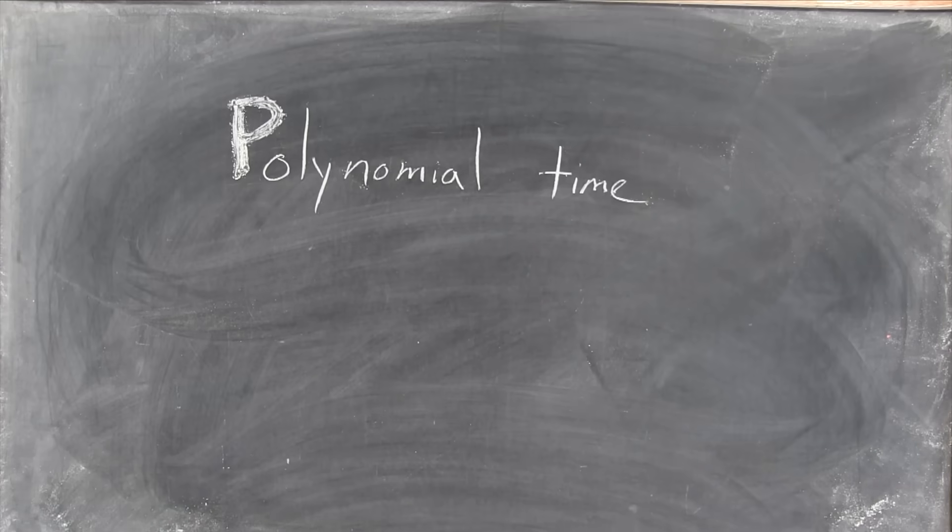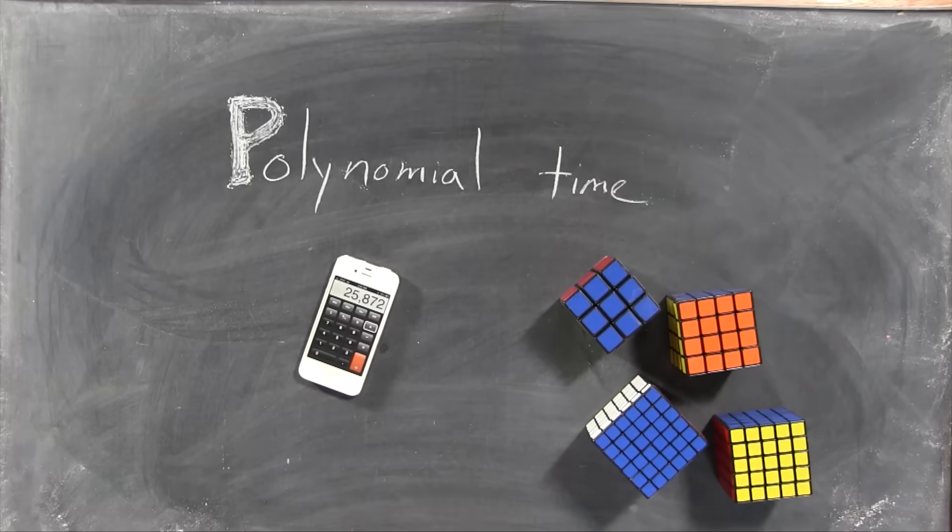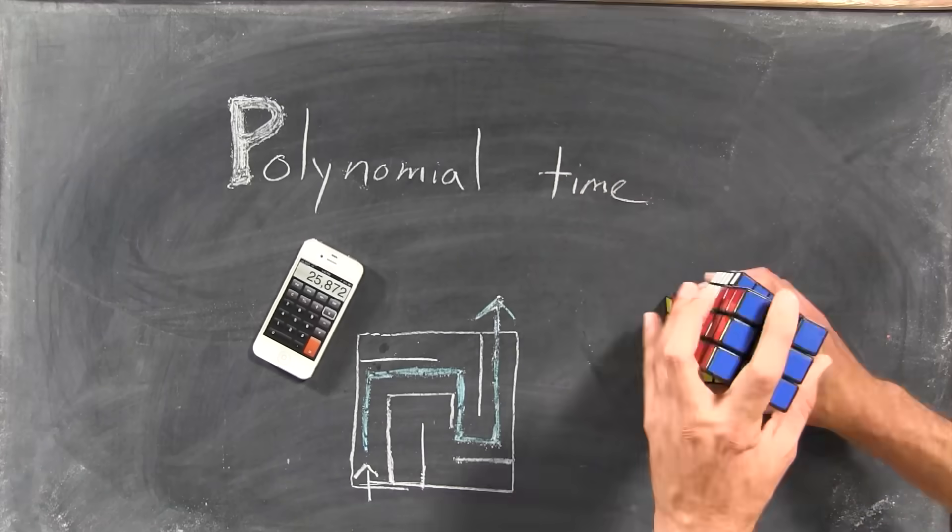So that's P. It's problems like mazes and multiplication, where the number of steps required isn't that bad compared to the size of the problem.